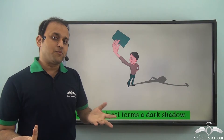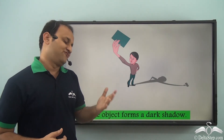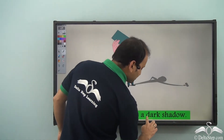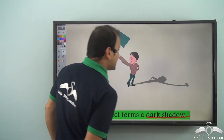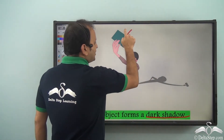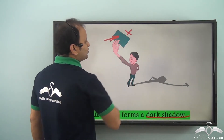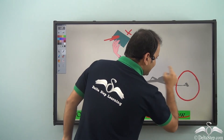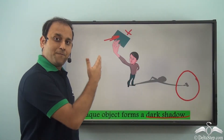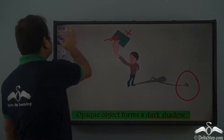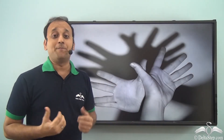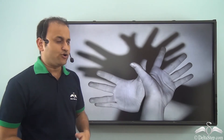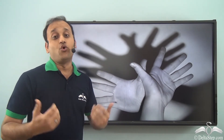What about an opaque object? In the case of an opaque object, it forms a dark shadow, because it does not allow any light to pass through it. As a result, you have a prominent dark shadow of an opaque object. Our hand is an opaque object, and as a result, we are able to form different kinds of shadows on the ground and even on walls.